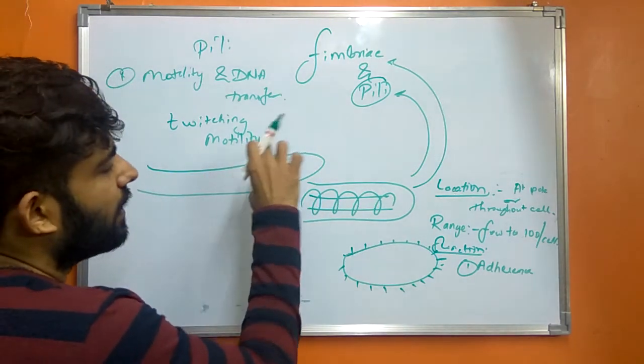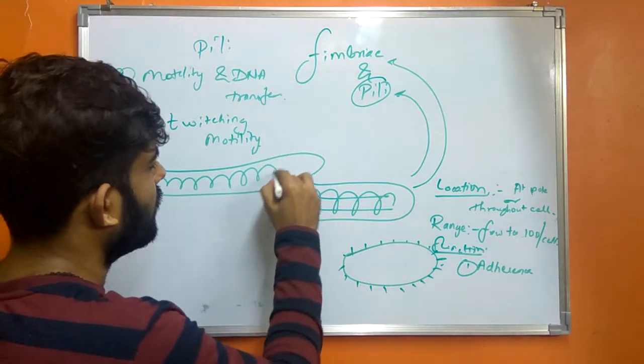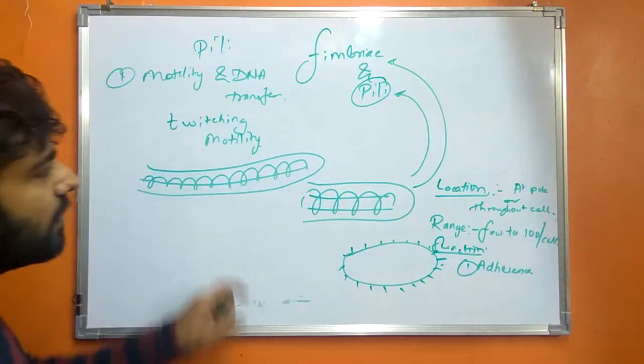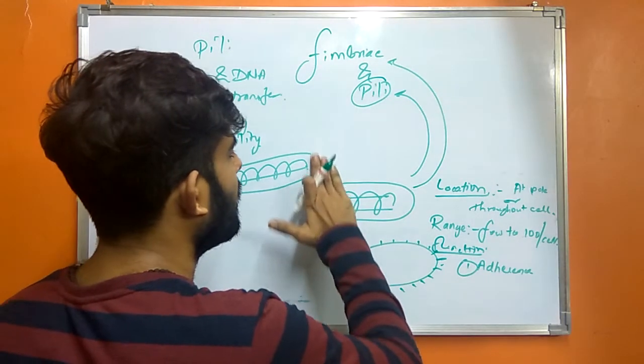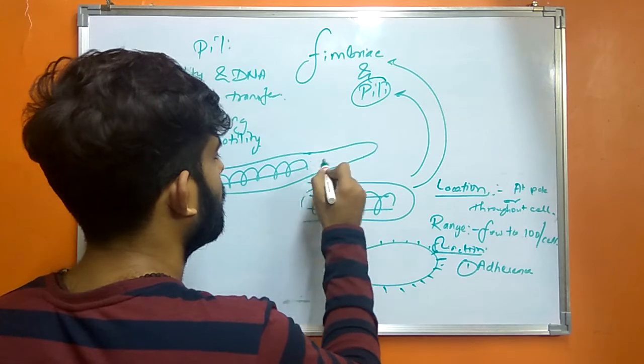This Pilli is generally made up of pilin protein which is helically arranged around a hollow core. An additional assembly of this pilin protein leads to the increase in size of this Pilli.